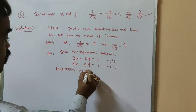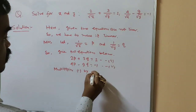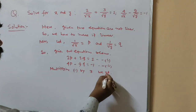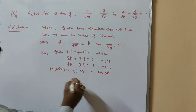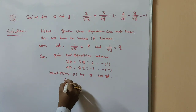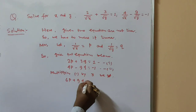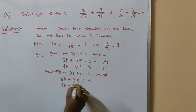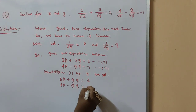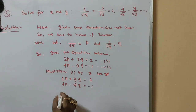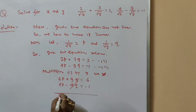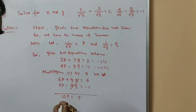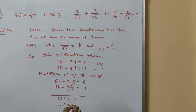Multiplying equation 1 by 3, we get 6p plus 9q equal to 6. Adding to 4p minus 9q equal to minus 1, we get 10p equal to 5, therefore p equal to 1 by 2.